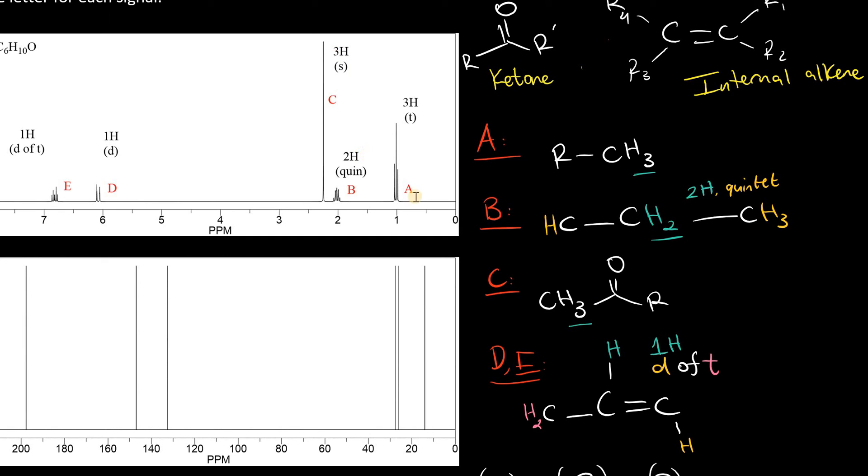So most probably, directly adjacent to the alkene, we have the carbonyl. Now we can prove that in several ways. For one, we have the alkene between 6 and 7 parts per million.